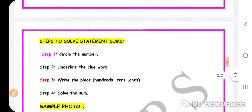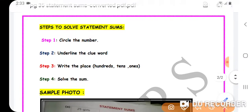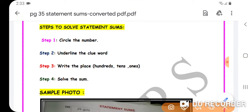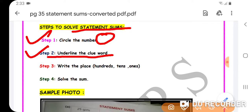Now I have some steps here which will help me to solve the statement sums. What is the first step? The first step is circle the number. The second step is underline the clue word. The third step is to write hundreds, tens, and ones on top of the number, and the last step is to solve the sum.